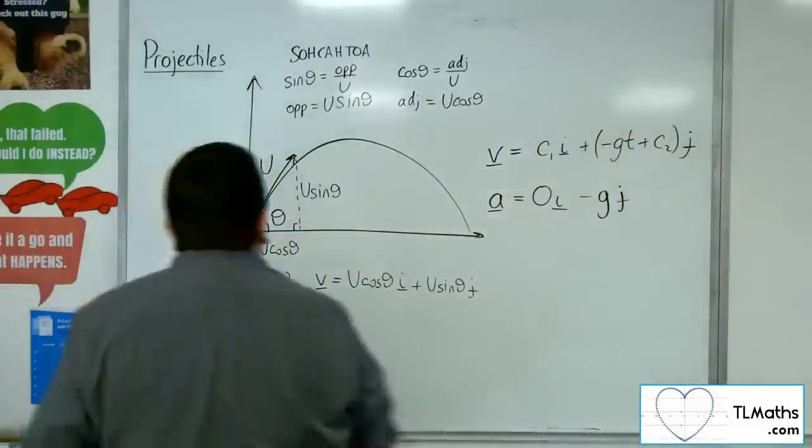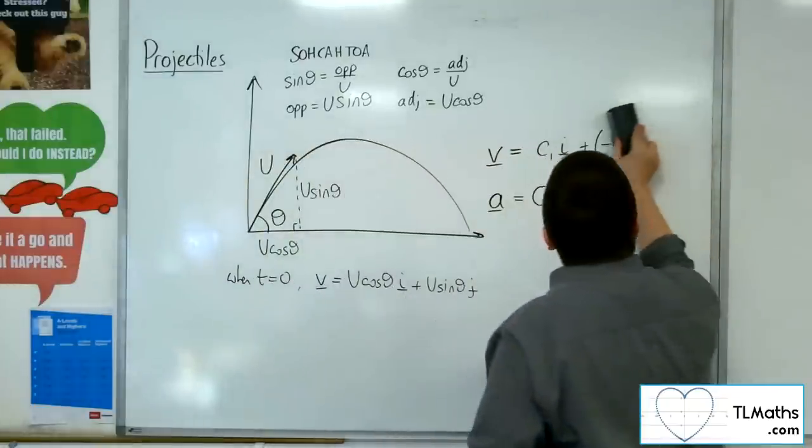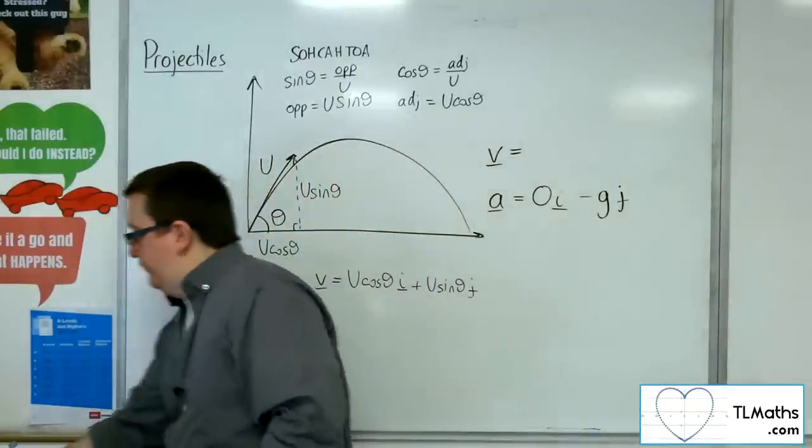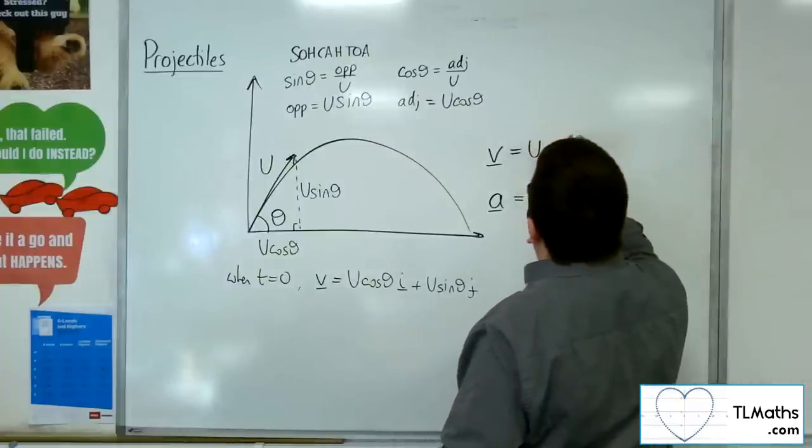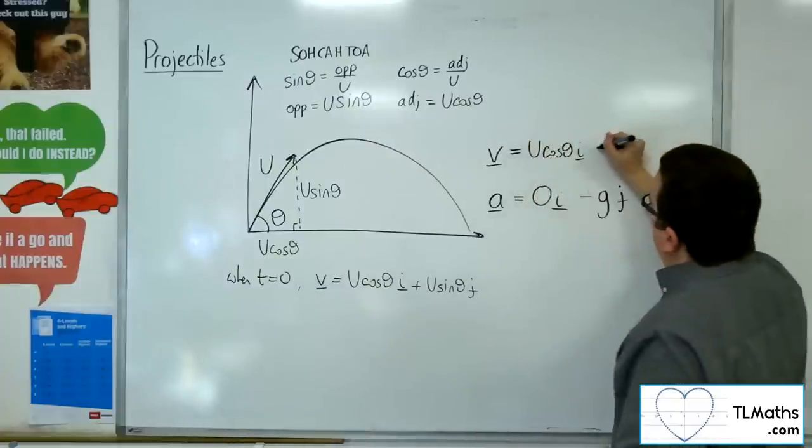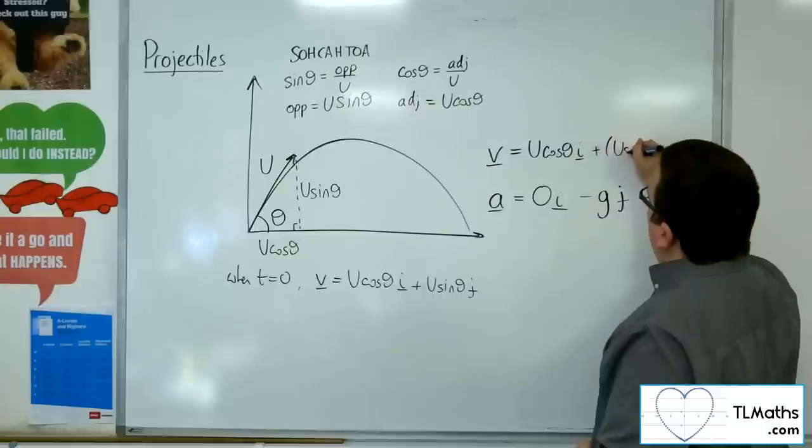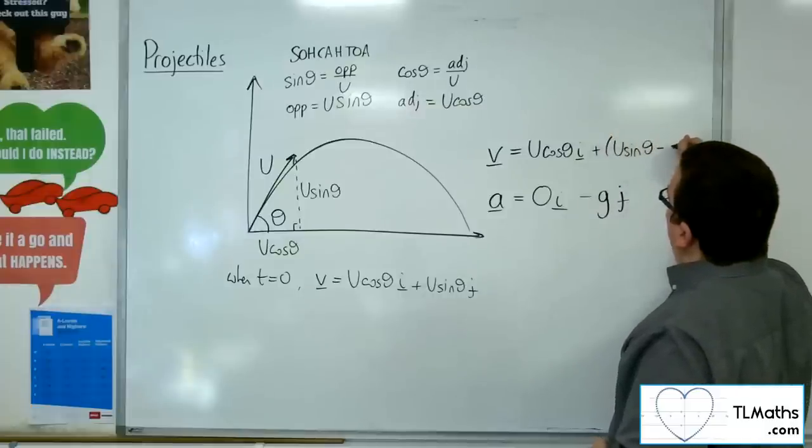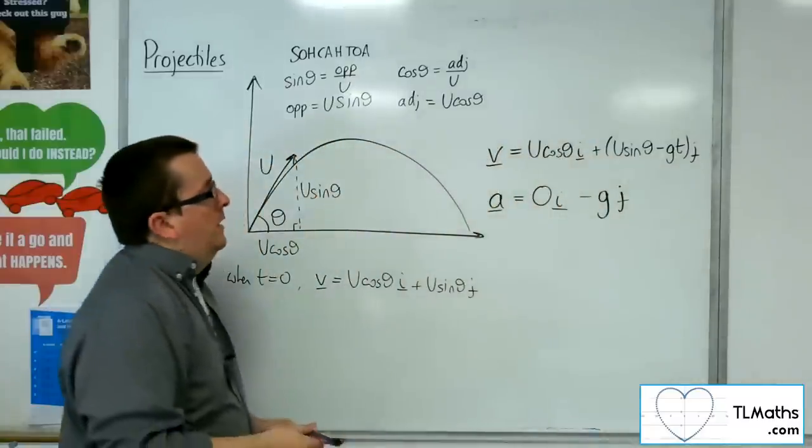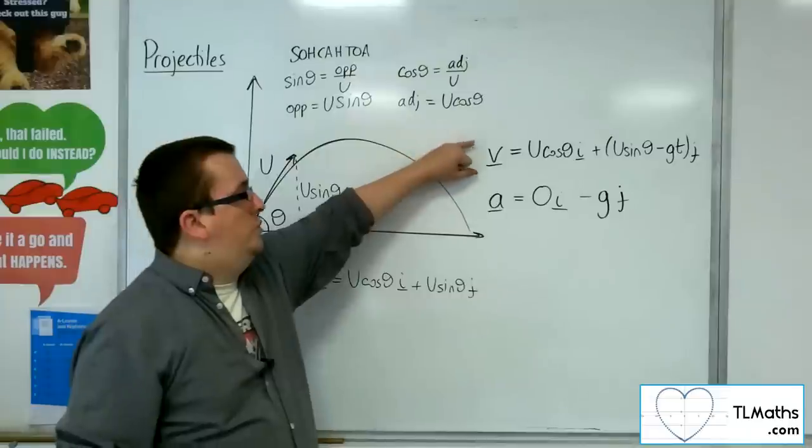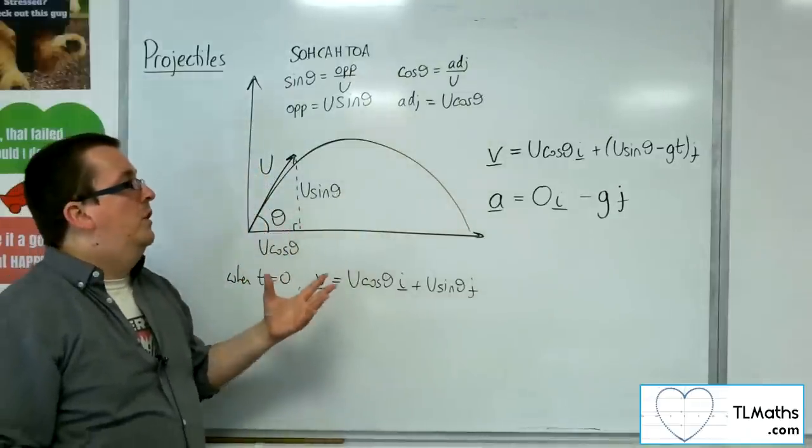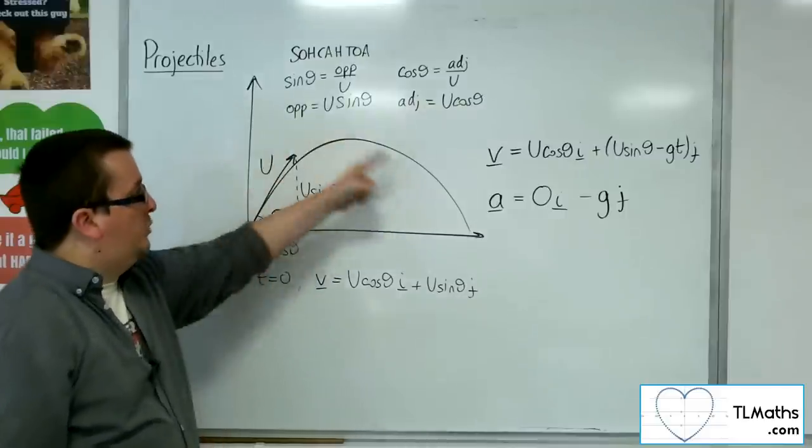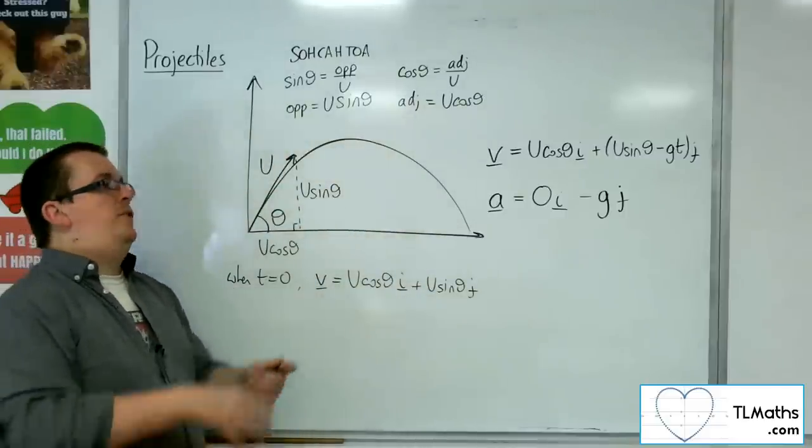So, what we can then write is that the velocity is equal to u cos theta i plus u sine theta minus g t j. And this gives you the velocity equation. This describes the velocity for the particle at any point along the curve, along through its curved motion.